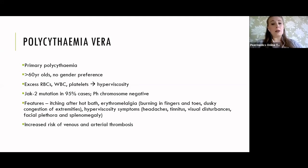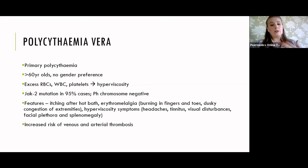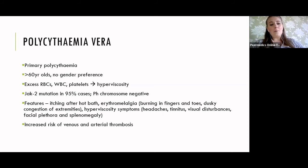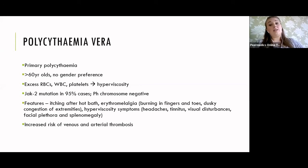Polycythaemia vera is the primary polycythaemia, tends to occur in people over 60 with no gender preference. You get excess red cells, and also sometimes excess white cells and platelets. It's associated with a JAK2 mutation but is Philadelphia chromosome negative. The two key unique features are itchiness after a hot bath and erythromelalgia - burning in fingers and toes with dusky congestion of the extremities. Hyperviscosity from excess cells reduces circulation to the brain, ears and eyes, causing headaches, tinnitus, visual disturbances and facial plethora. There's also increased risk of venous and arterial thrombosis.